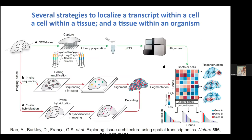So how do you do this? There's going to be a major module just on the wet lab work. As a computational biologist, it's extraordinarily important that you understand how your data got to you—what happened to your cells, what happened to your tissues before you received your data. This also ties into the technology selection question, which I'll get to at the end of the talk.